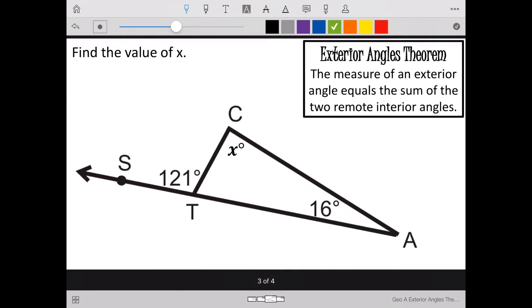Moving on. Find the value of x again. Take a look at what I have here. I still have an exterior angle, but this time I know what it is. It's 121. That exterior angle still has to equal my two remote interior angles added together.